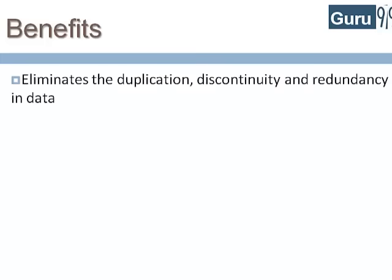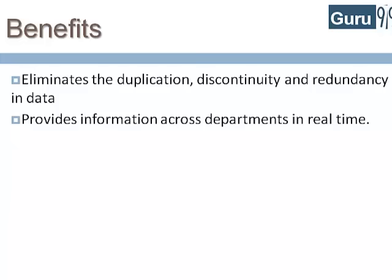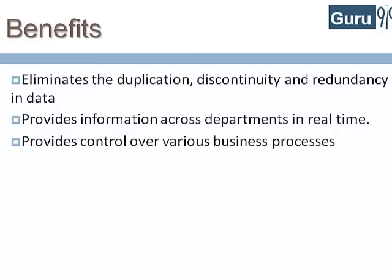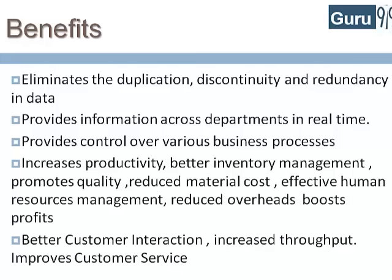The key benefits of the centralized system are: it eliminates duplication, discontinuity, and redundancy in data; it provides information across departments in real time; it provides control over various business processes; it increases productivity, provides better inventory management, promotes quality, reduces material cost, allows for effective human resources management, and reduces overhead while boosting profits, better customer interaction, increased throughput, and improved customer service.